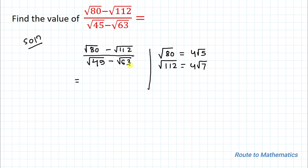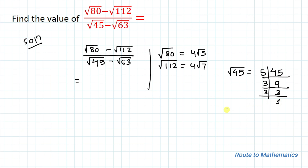In the denominator we have root 45 and root 63. For root 45, since the last digit is 5 we divide by 5 to get 9, then by 3 to get 3, then by 3 to get 1. We get one pair of 3s giving a single 3, and 5 has no pair so we write root 5. Therefore root 45 = 3 root 5.